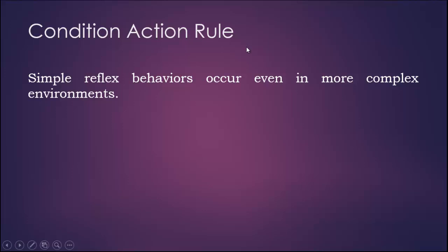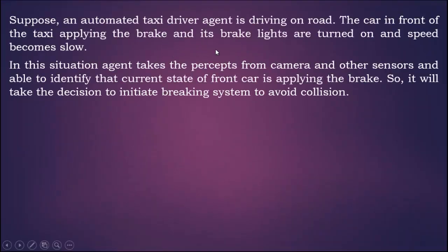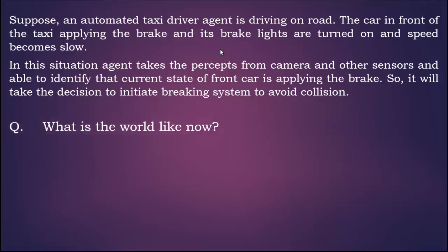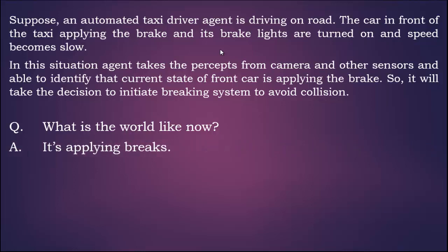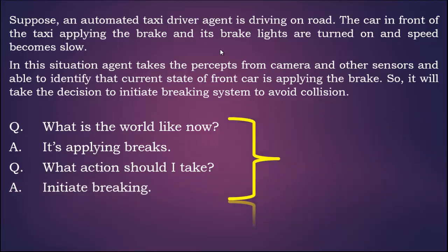Simple reflex behaviors occur even in more complex environments, which is called the Condition-Action Rule. Suppose an automated taxi driver agent is driving on the road. The car in front of the taxi applies the brake, its brake lights are turned on and speed becomes slow. In this situation, the agent takes percepts from the camera and other sensors and is able to identify that the current state of the front car is applying the brake. So it will take the decision to initiate the braking system to avoid collision.